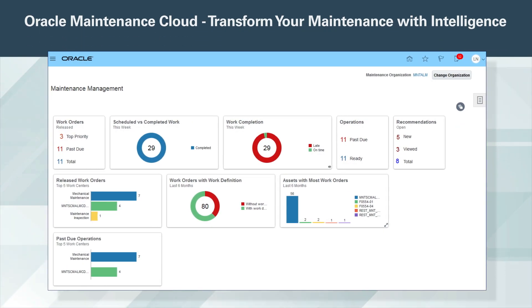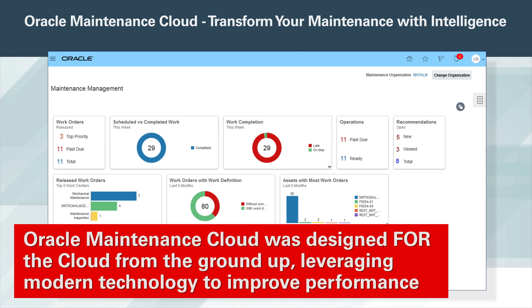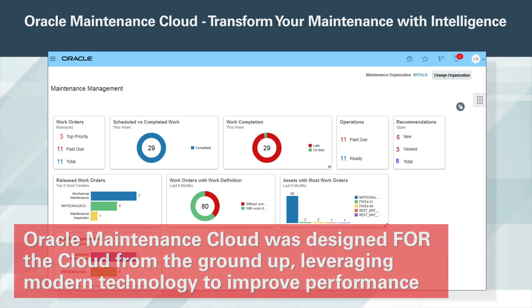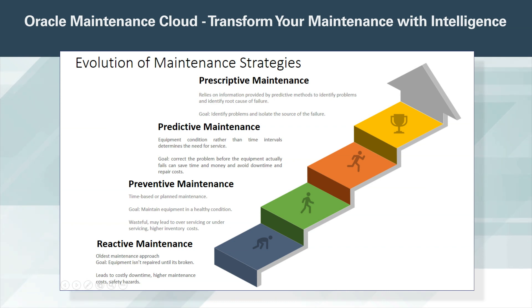Oracle Maintenance Cloud is an integrated enterprise asset management system that provides you with the ability to define and maintain assets using maintenance processes that are consistent and repeatable. Oracle Maintenance Cloud was designed for the cloud from the ground up, leveraging modern technology to improve performance. Our vision for Oracle Maintenance Cloud includes capabilities to enable multiple maintenance strategies from reactive to prescriptive. Maintenance Cloud's robust foundation and flexibility will support your maintenance journey as it evolves.